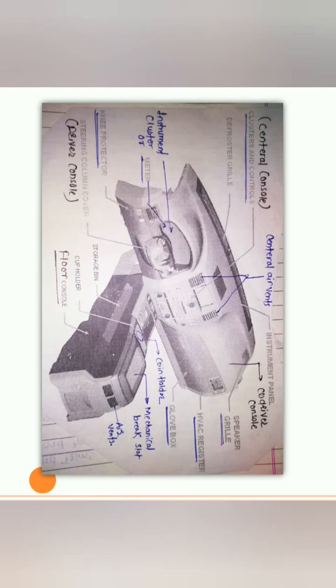The co-driver side console includes the speaker grills, ear vents, glove box, and HVAC cover. As we discussed, the HVAC unit is mounted below the dashboard. Different pockets and various assemblies are placed at the co-driver side, which is why this area is termed the co-driver side console.